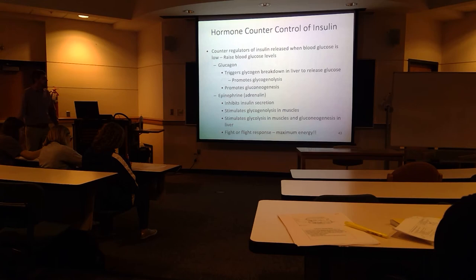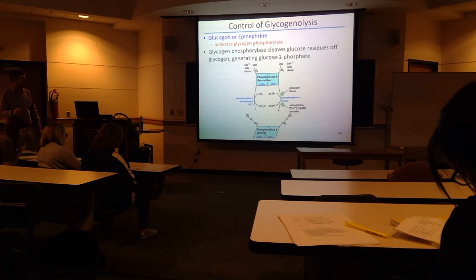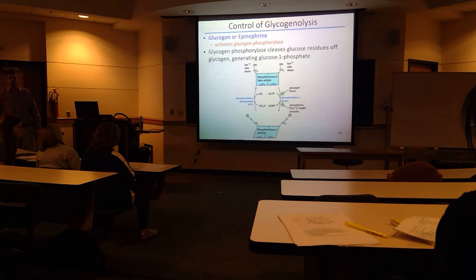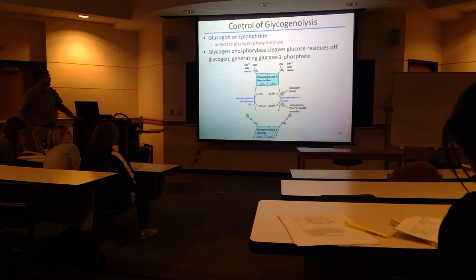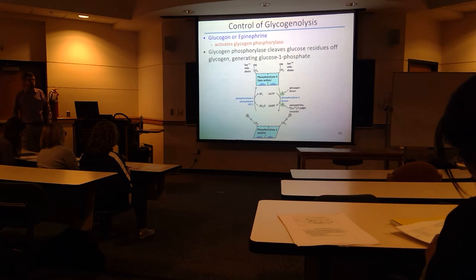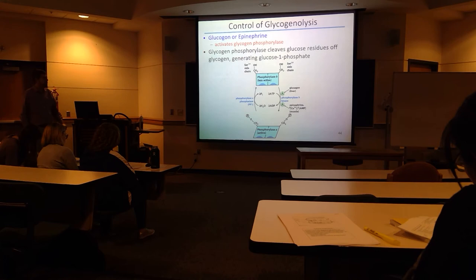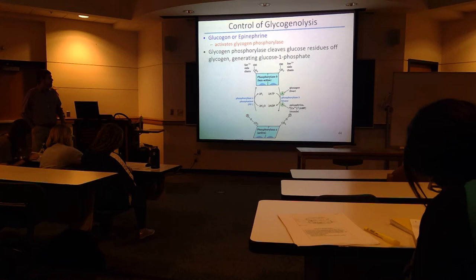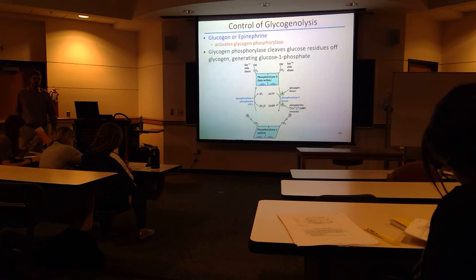Now I'll talk about how these hormones regulate glycogenolysis first. We're going to talk about how to activate or inhibit glycogen phosphorylase. If glycogen phosphorylase goes, the whole pathway goes — if you inhibit it, you don't break down glycogen; activate it and you do. Glucagon and epinephrine both activate glycogen phosphorylase, causing glycogen breakdown.